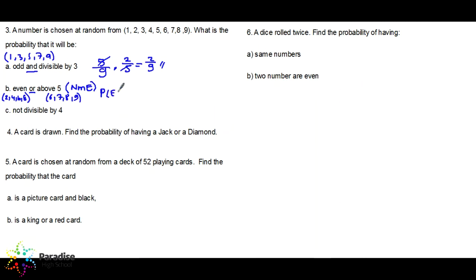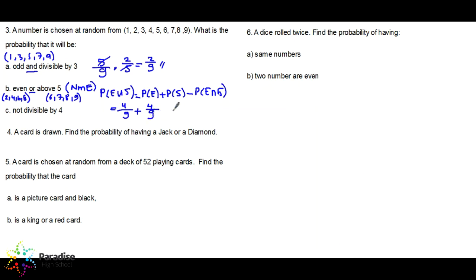The formula for non-mutually exclusive events: probability of even OR above five equals probability of even plus probability of above five minus probability of even AND above five. Probability of even is four over nine. Probability of above five is four over nine. Numbers in common are six and eight — that's two over nine. So: four over nine plus four over nine minus two over nine equals six over nine, which simplifies to two over three.